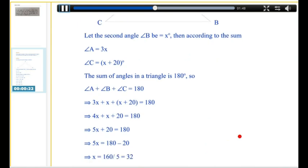Now, we know that the sum of angles in a triangle is 180 degrees. So, angle A plus angle B plus angle C is equal to 180.